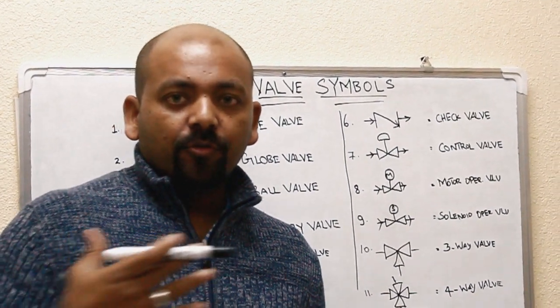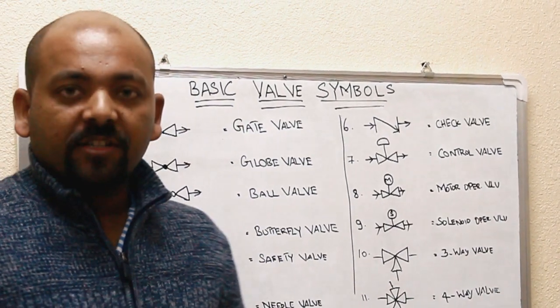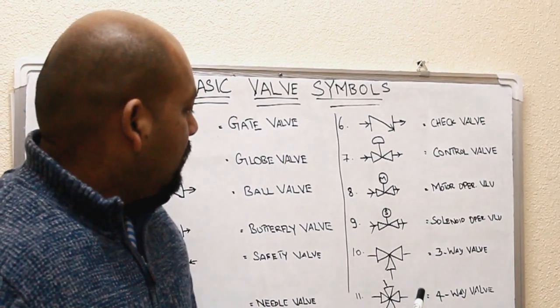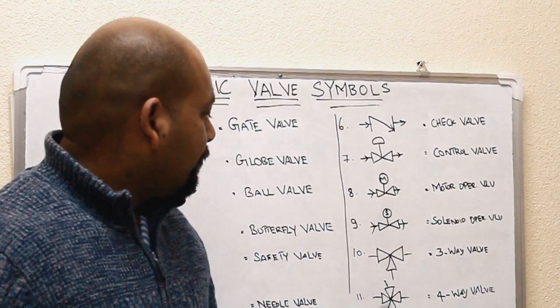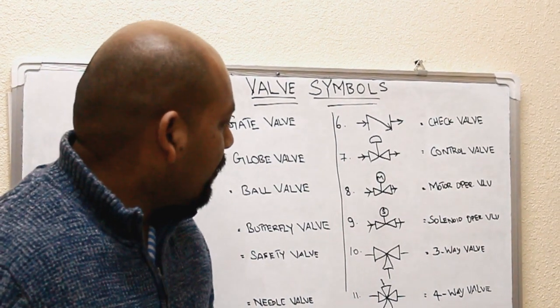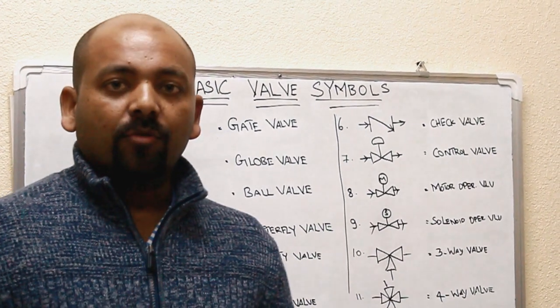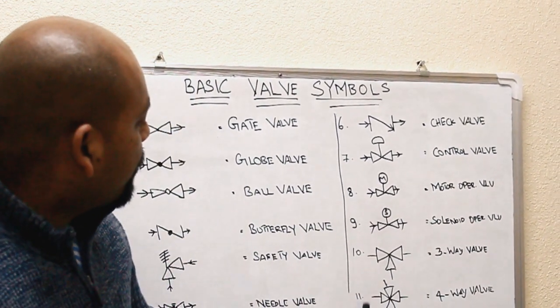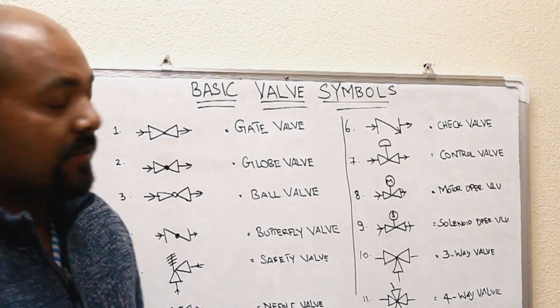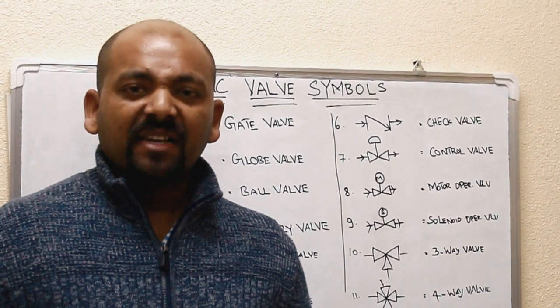The last one is the four-way valve. Four-way valve consists of four ports and the symbol will be represented like this. So these are the basic valve symbols used in the P&ID.